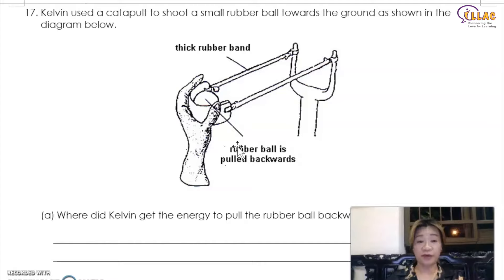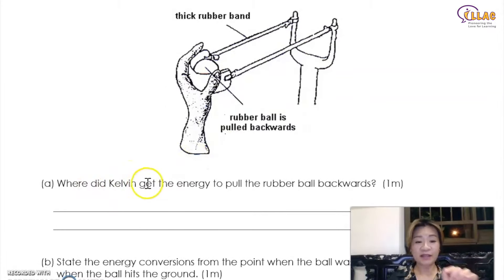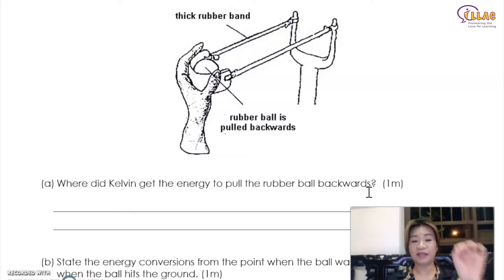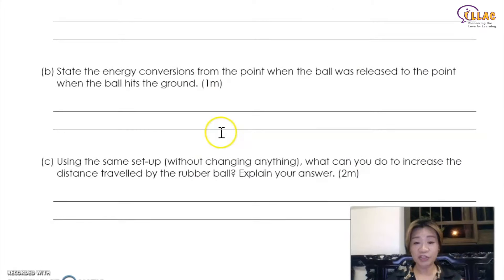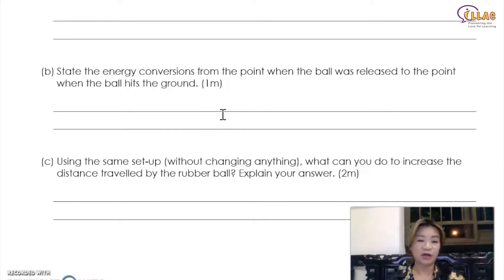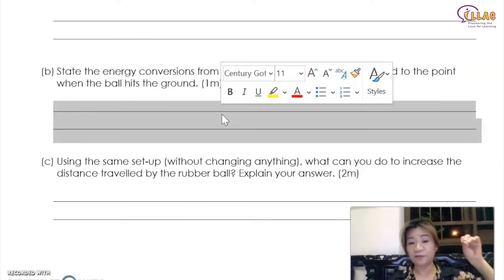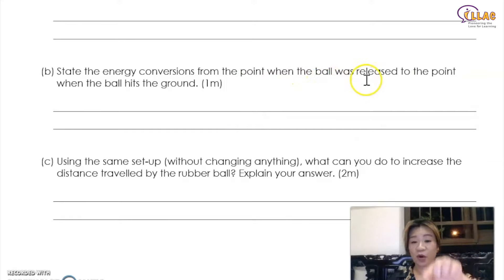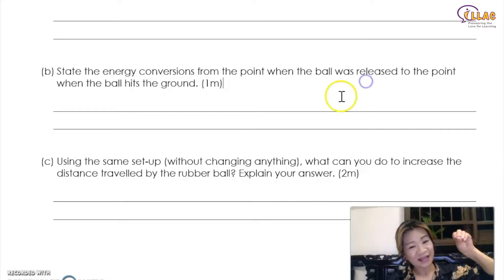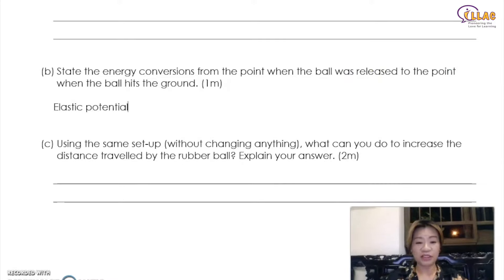Let's try another one — a catapult, a common question for energy. The question asks: where did Kelvin get the energy to pull the rubber ball backwards? Kelvin, a human being, gets the energy from food. So Kelvin got the energy from the food that he ate. Now, state the energy conversions from the point when the ball is released to the point when the ball hits the ground. At the point where the ball is released, it has completely elastic potential energy — you don't have to start from kinetic since it's asking from the point of release. That means he is pulling it and holding it there — so that energy is the elastic potential energy.